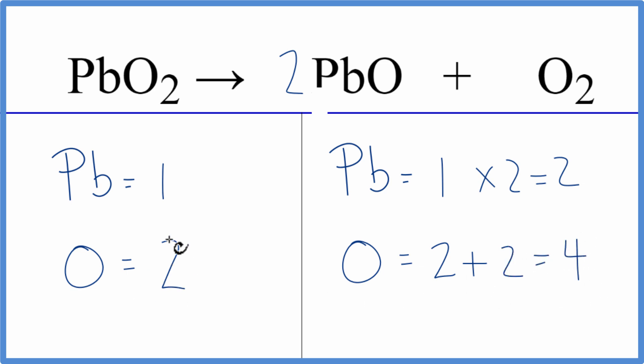So I can work with that because I can get this oxygen to be four by putting a two in front of the PbO₂. That'll also balance the lead atoms, the Pb atoms.